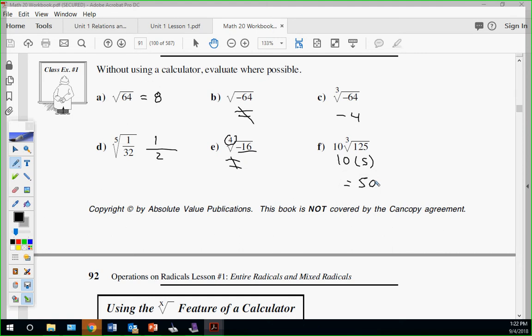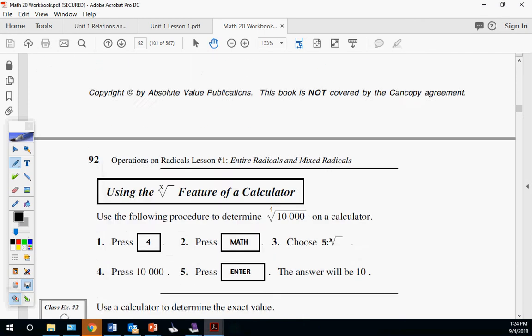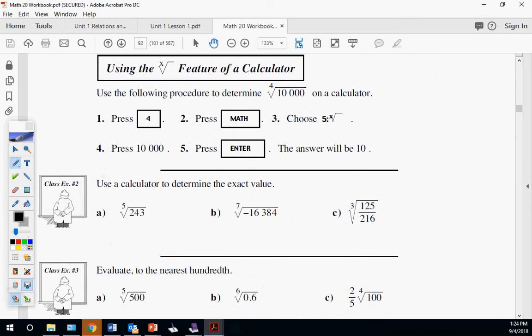Questions? We sped through that because we already talked about it. Now we'll slow down and try to get through the lesson. If you have your calculator, I'm showing how to use the root x feature. You put the number you want to take the radical of first, then go find the math root x button. In this case, they're showing how to fourth root ten thousand.